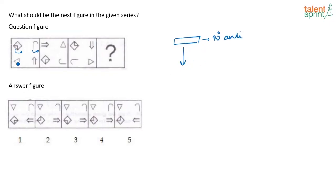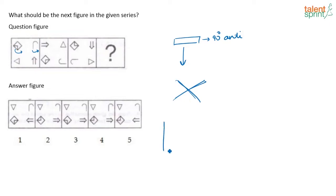Now when you look at the bottom elements, what happens is they rotate by 90 degrees in the clockwise direction and they go diagonally to the two other sides. Let me just show you this particular figure how it is coming.